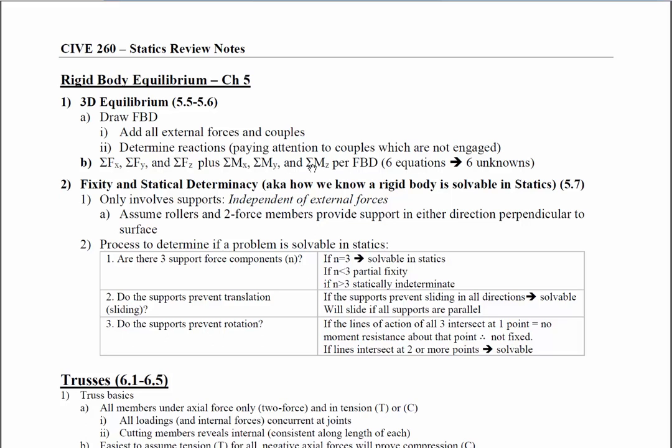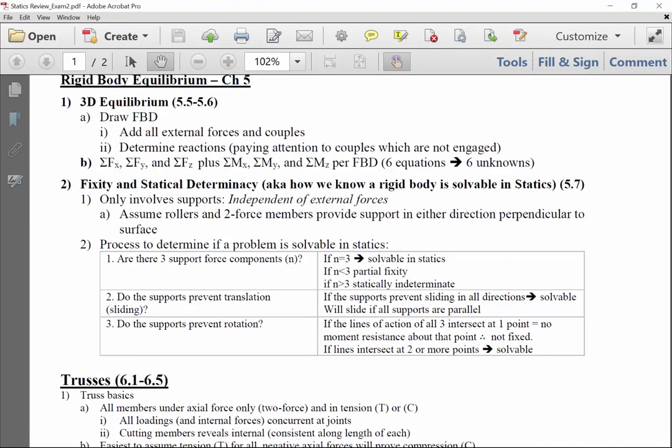After we covered 3D equilibrium, we got back into two-dimensional problems and talked about fixity and statical determinacy. We had three rules for determining if problems were solvable in statics. If there are three support force components, that's a good thing because we have three equations: sum of the force X, sum of the force Y, sum of the moment. We also do not want parallel support forces; if they are parallel, then we can have translation perpendicular to those supports. The third is that we want the lines of action to intersect at one or more points. We know that with two or more intersection points, the problem is solvable. If all three of those are true for a rigid body, noting that this is the free body diagram without any applied loads—only reactions—then we know that that system, no matter what the external loads are, is solvable.